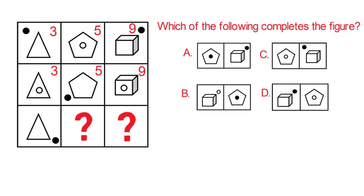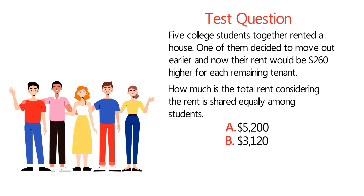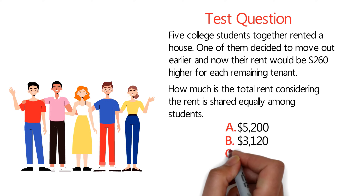Here's an interesting question you may need to know not just for the test but also in real life. Five college students together rented a house. One of them decided to move out earlier, and now the rent would be $260 higher for each remaining tenant. What is the cost of the total rent? Choices: A) $5,200, B) $3,120, C) $2,600, and D) $2,340.